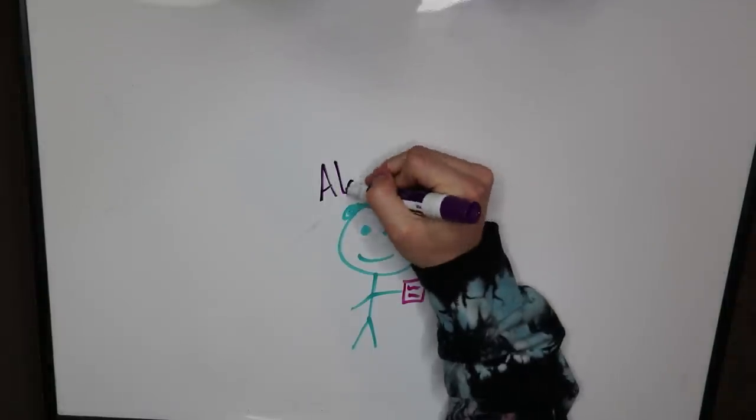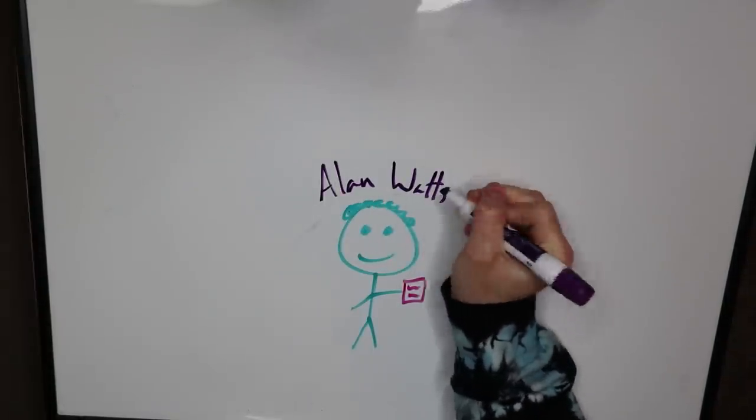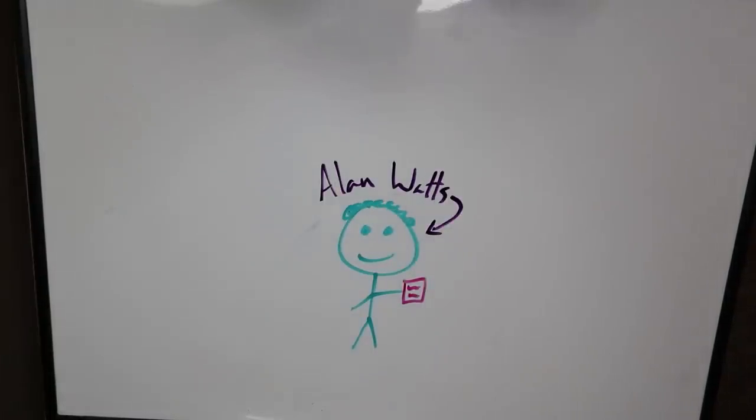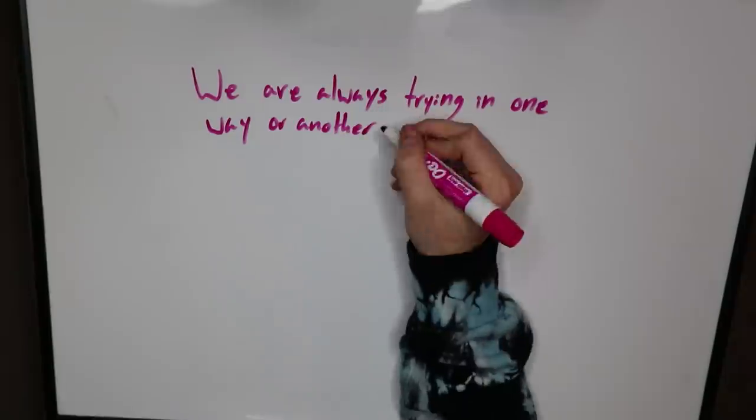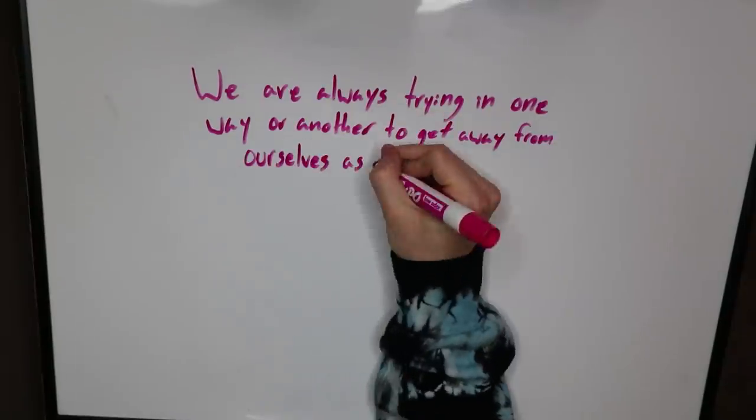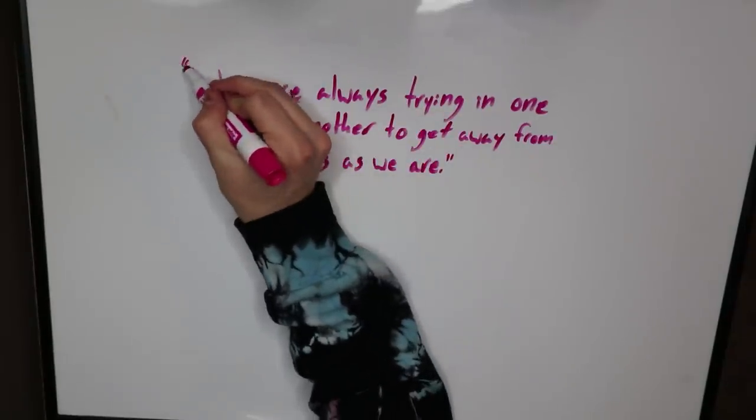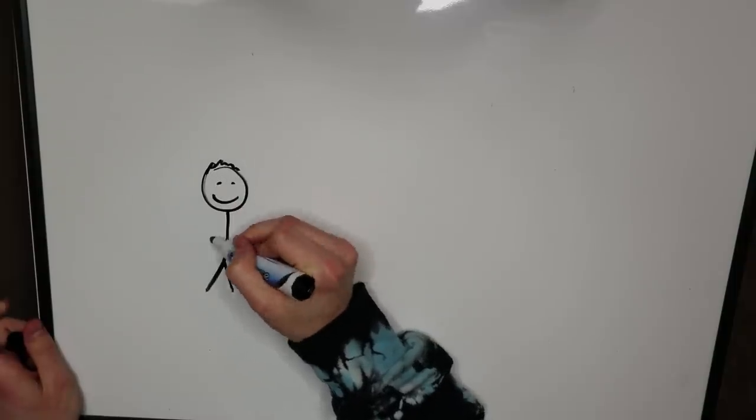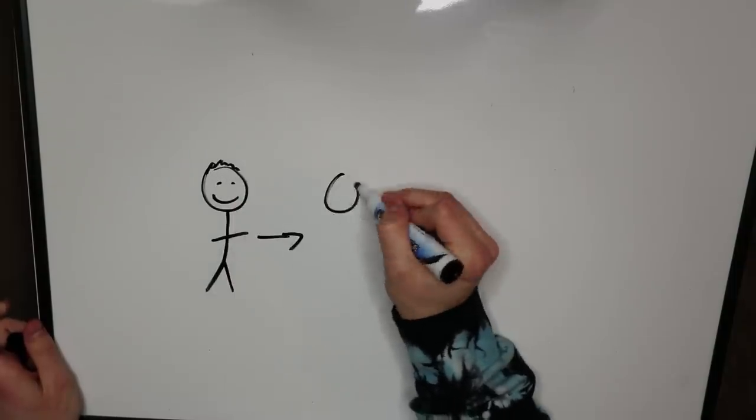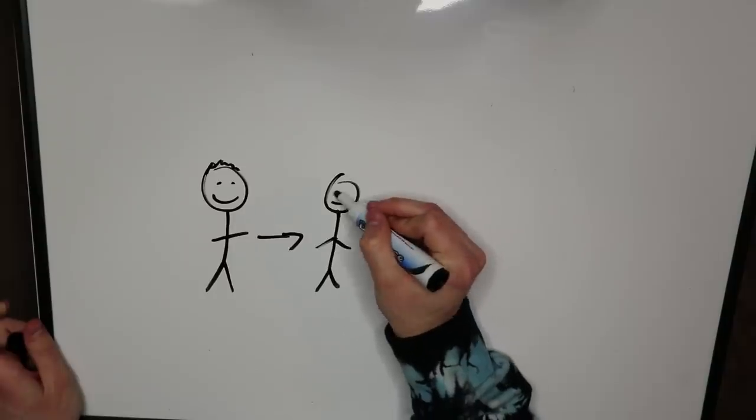One of my all time favorite philosophers is Alan Watts, a British American philosopher who interpreted and popularized Eastern philosophy for a Western audience. In other words, he went across the world and brought back a bunch of knowledge to us Americans. The first quote of his that resonated with me was, We are always trying in one way or another to get away from ourselves as we are. I then realized I had spent most of my teenage years longing to be like someone else or have what someone else had. It didn't matter what I had or what I had accomplished.